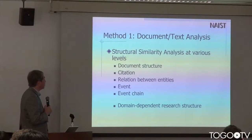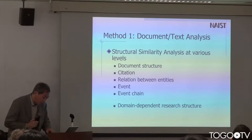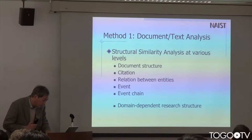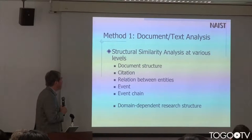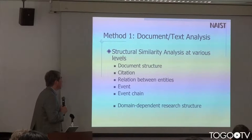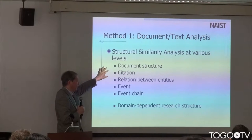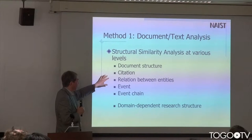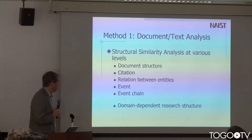The methods we are working on include first document analysis. We like to analyze document structure, citation type analysis, entity extraction, and relations between entities. An entity can be described as an event, and there can be some event chain with causality relationships.